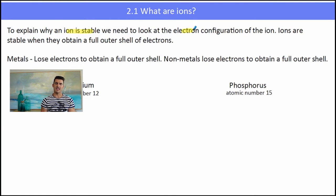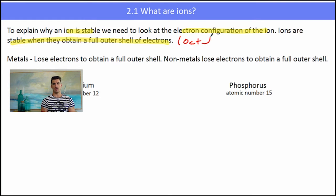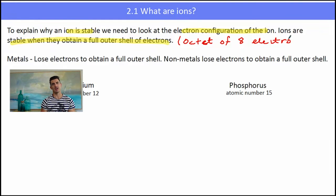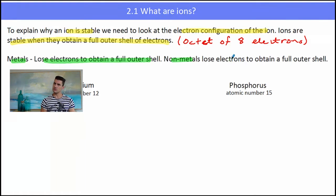To explain why an ion is stable, we need to look at the electron configuration of the ion. An ion is stable when it has a full outer shell of electrons. A full outer shell means an octet, and an octet means 8. So the ions are stable when they have 8 electrons in their outer shell. Remember that metals want to lose electrons to have a full outer shell, and non-metals want to gain electrons to have a full outer shell.